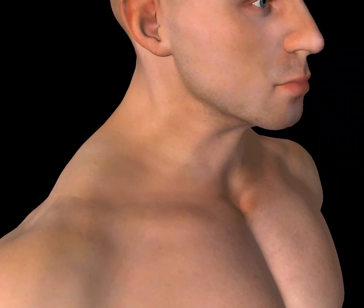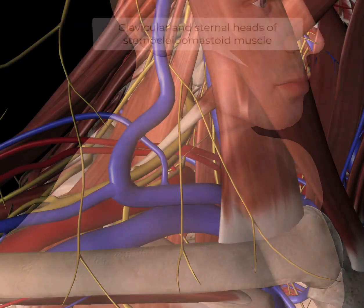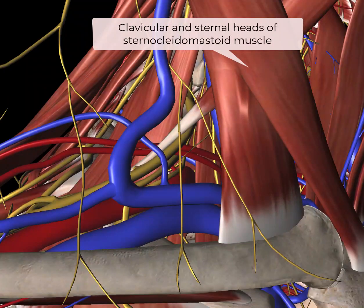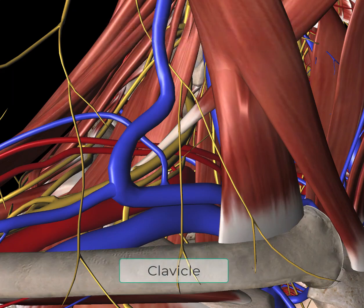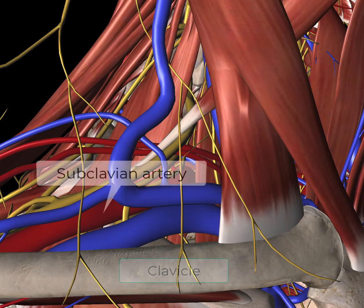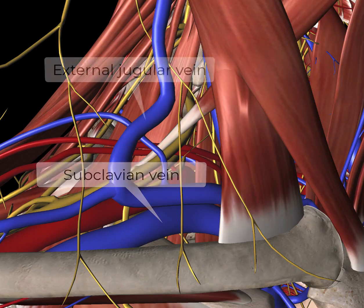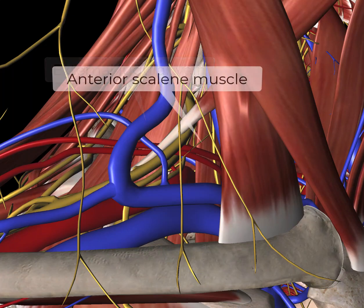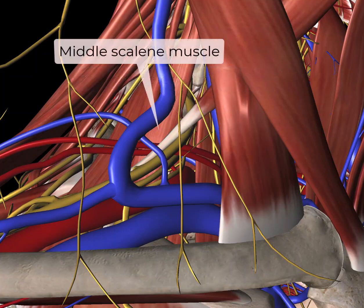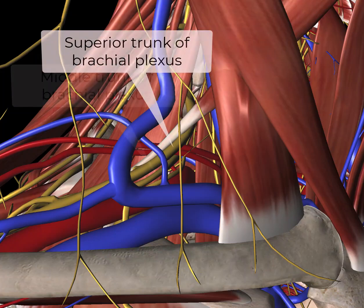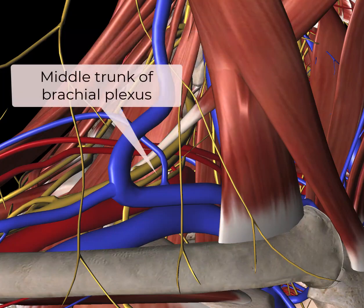This video provides an overview of the anatomy for the supraclavicular and interscalene blocks. The pertinent structures include the clavicular and sternal heads of the sternocleidomastoid muscle, the clavicle, the subclavian artery and vein, the external jugular vein, the anterior and middle scalene muscles, and the superior, middle, and inferior trunks of the brachial plexus.